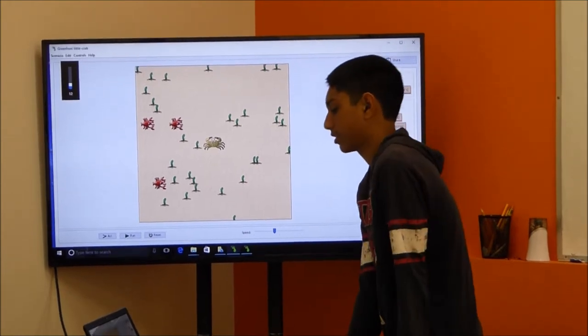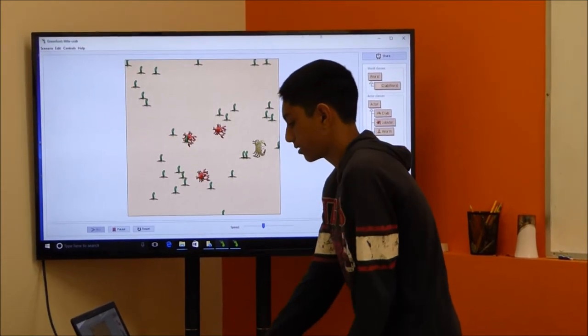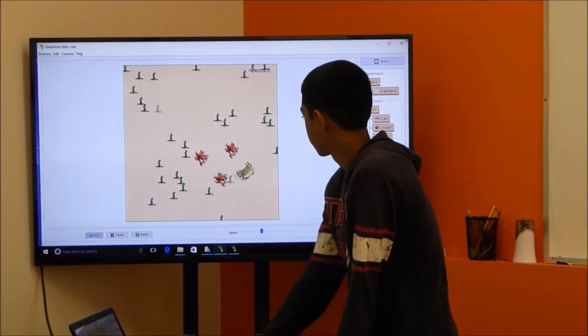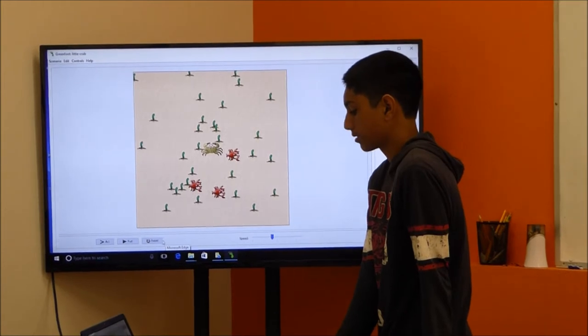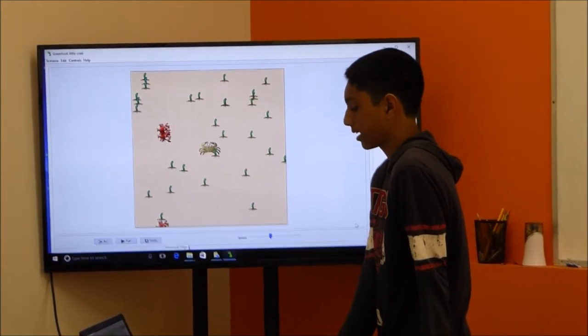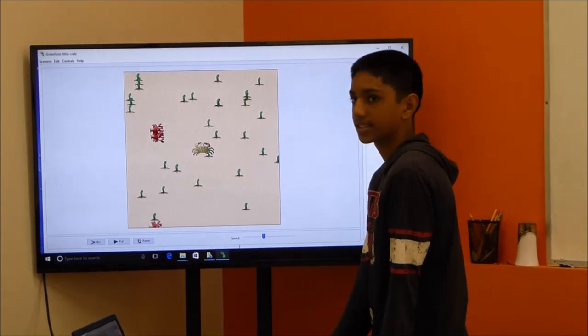So, as you can see, there are thirty worms at the start. And usually it makes a sound. And if the lobster touches the worm, it gets, sorry, the crab, it gets killed. And, yeah, that's it for my presentation.